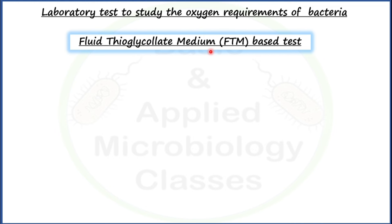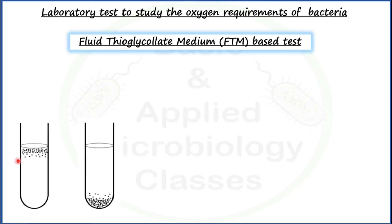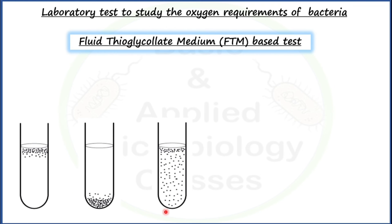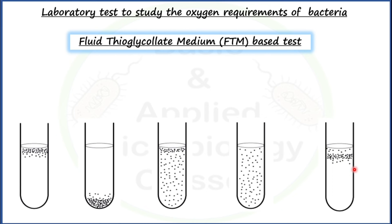In the FTM test, we take fluid thioglycolate medium and inoculate the unknown bacteria into it. After inoculation, different types of growth patterns are observed — bacteria can grow in the upper layer, at the bottom, throughout the medium, or in a subsurface band. These growth patterns tell us what kind of bacteria it is with respect to oxygen requirement.